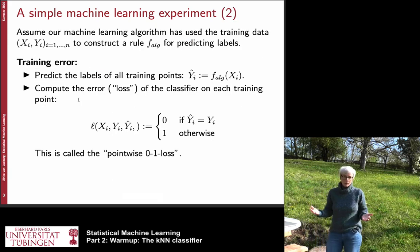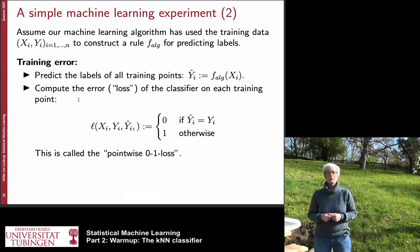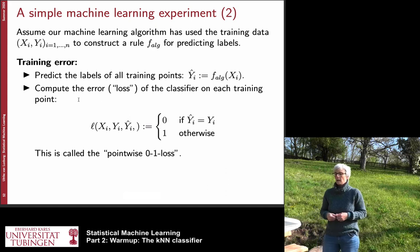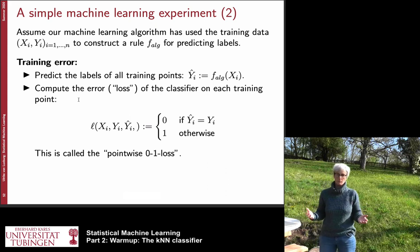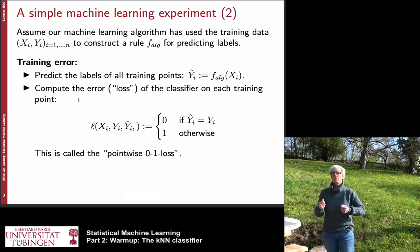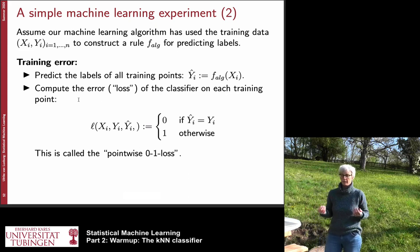We assume we have training data and some algorithm — it could be the k-nearest neighbor algorithm or some other algorithm. This algorithm constructs a function, which I call F_alg (F-algorithm), the function picked by the algorithm on the basis of the training points. Now we want to compute the training error and the test error.